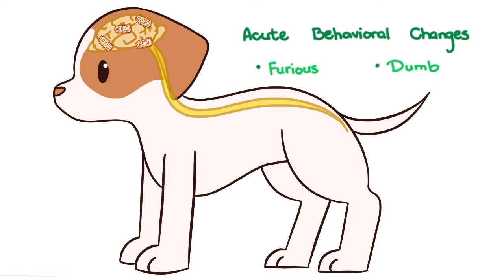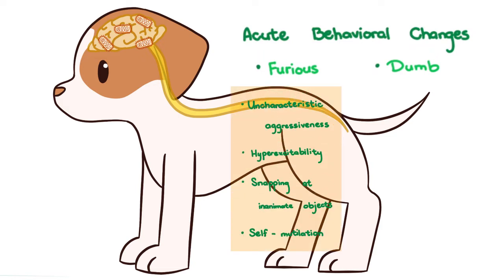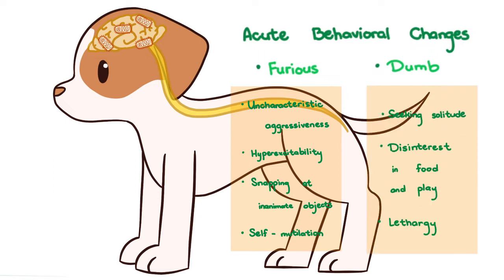This division is of little practical value because the signs vary a lot and often meld together. But for discussion purposes, under the furious form there's uncharacteristic aggressiveness, hyperexcitability, snapping at inanimate objects, and self-mutilation. Under the dumb form, there's seeking solitude, disinterest in food and play, and lethargy.